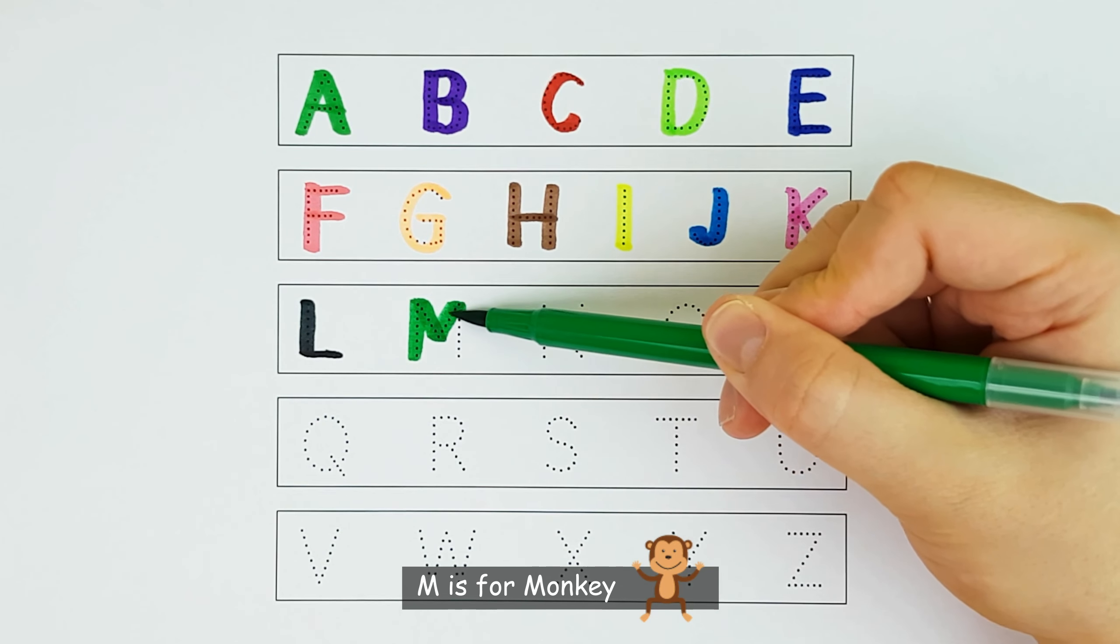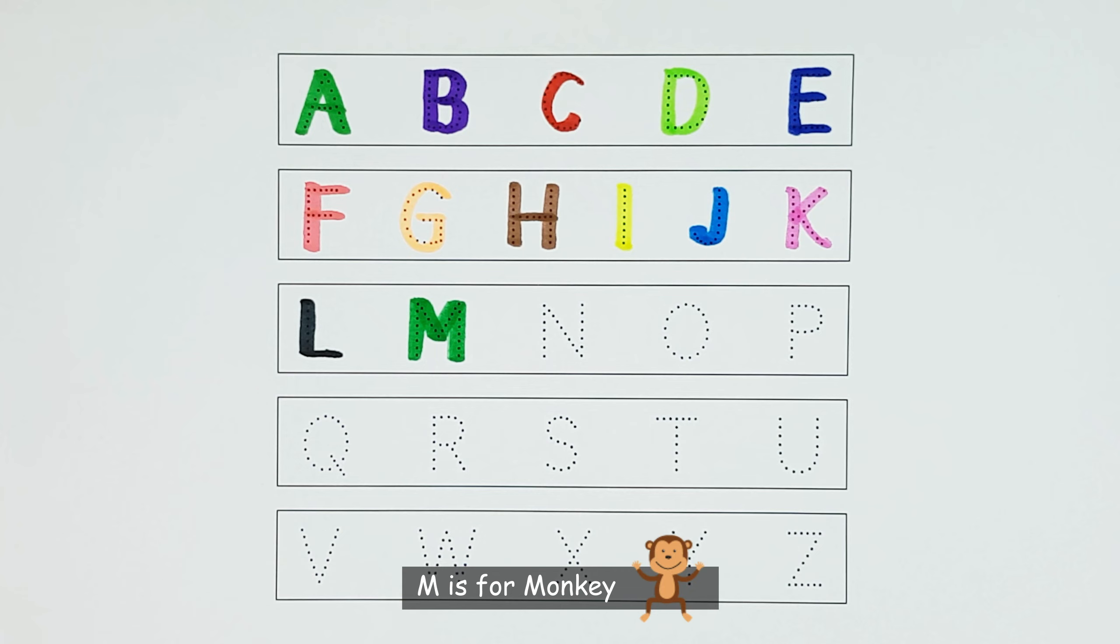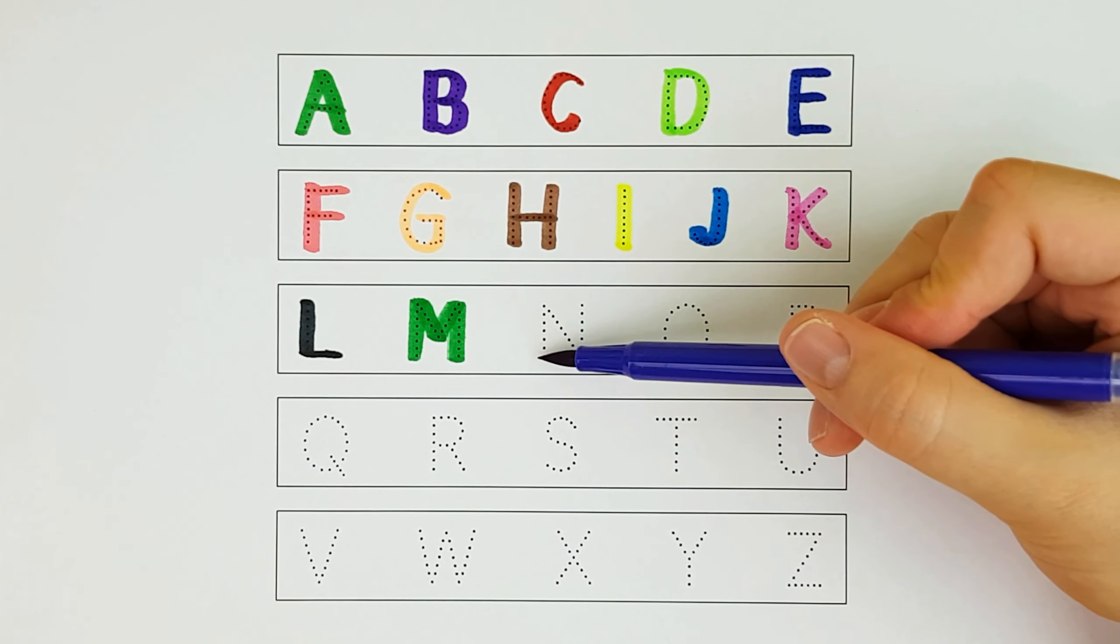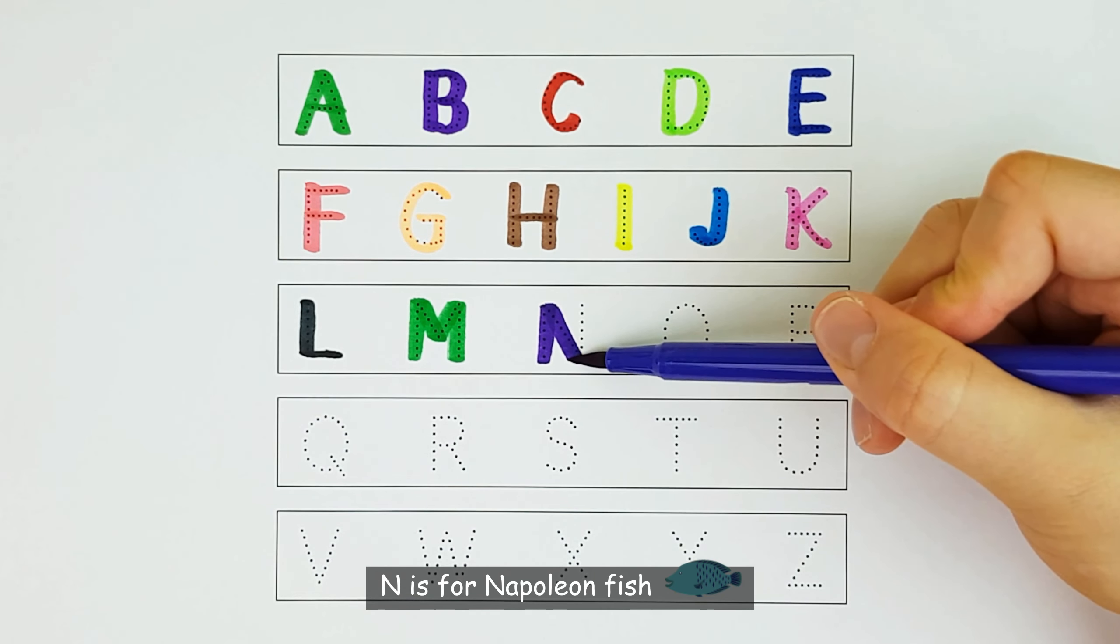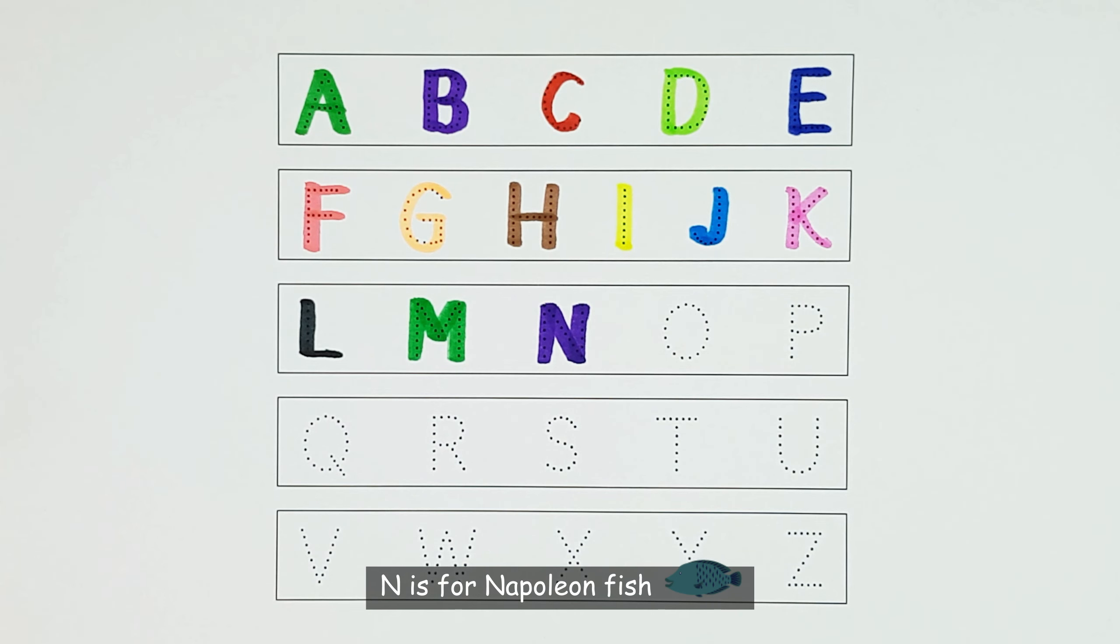M. M is for monkey. M. N. N is for napoleon fish. N.